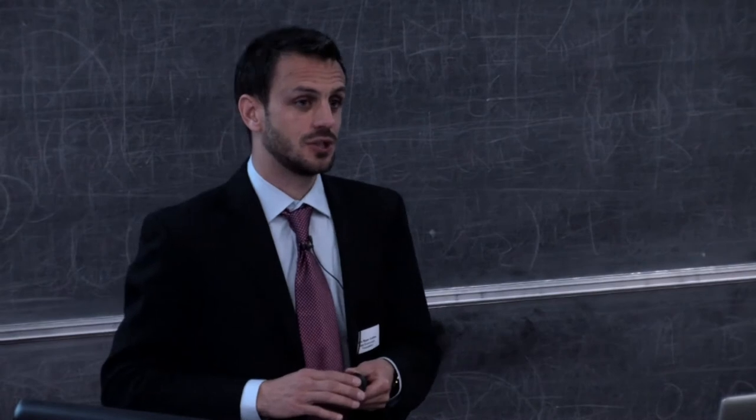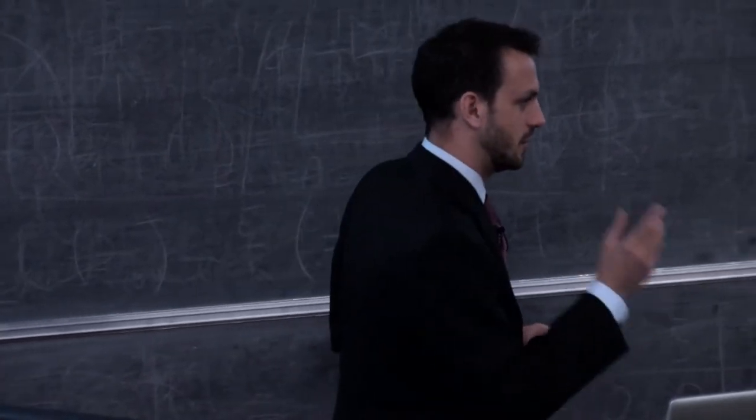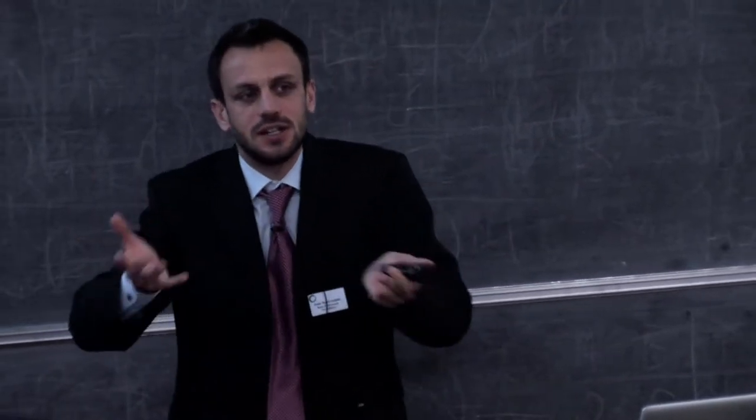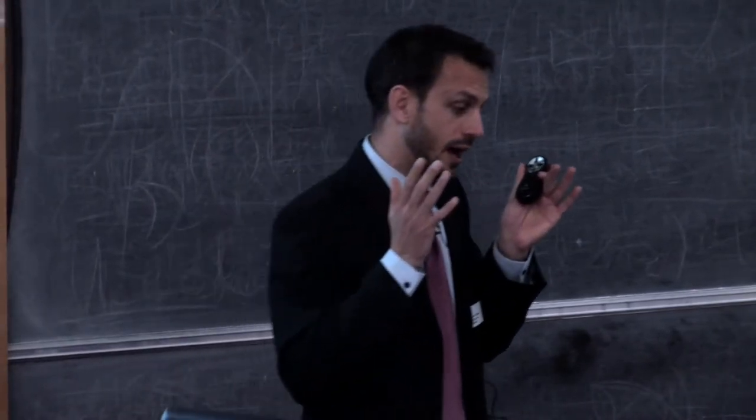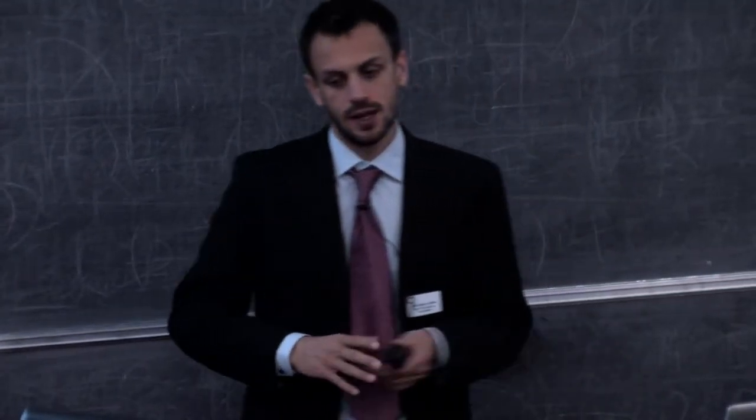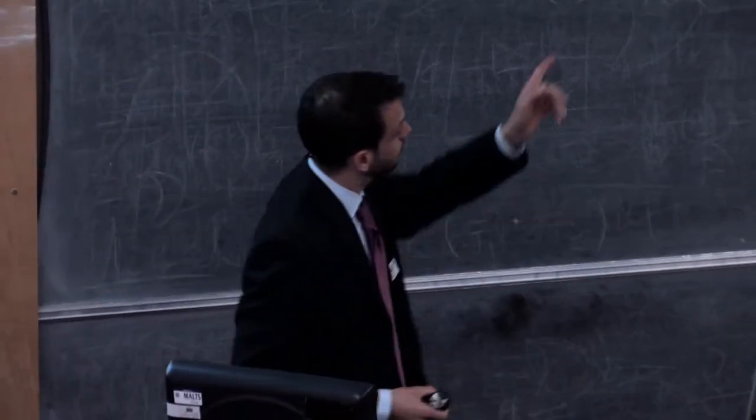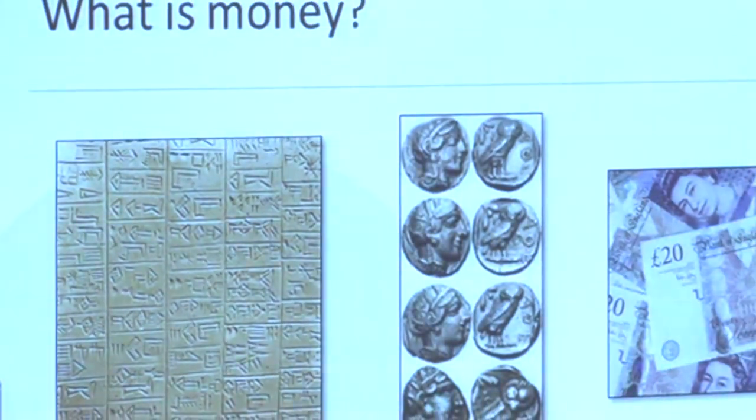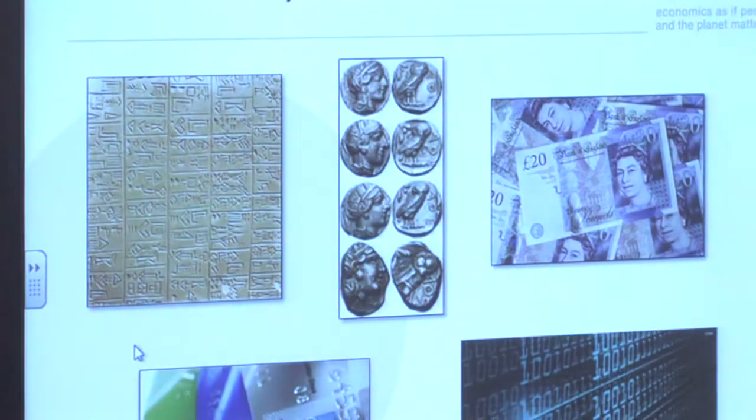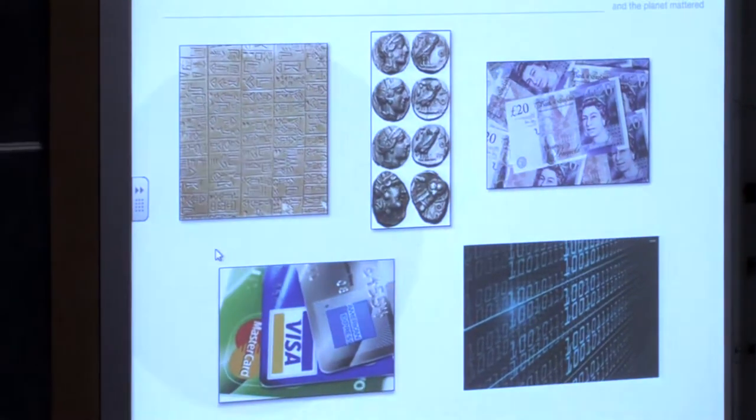In fact, history shows us, and economic anthropologists, historians, and heterodox economists have done research to show that many thousands of years before the invention of coins and gold, accounting was taking place. Records of debt and credit were taking place. This is a cruciform block from the Babylonian times, 4,000 years ago, thousands of years before gold coins.